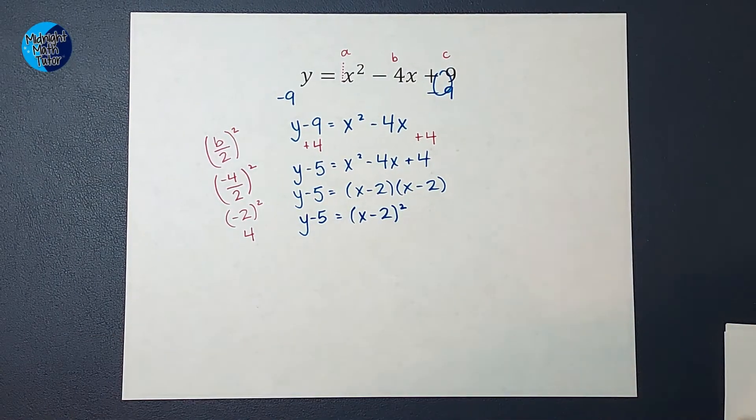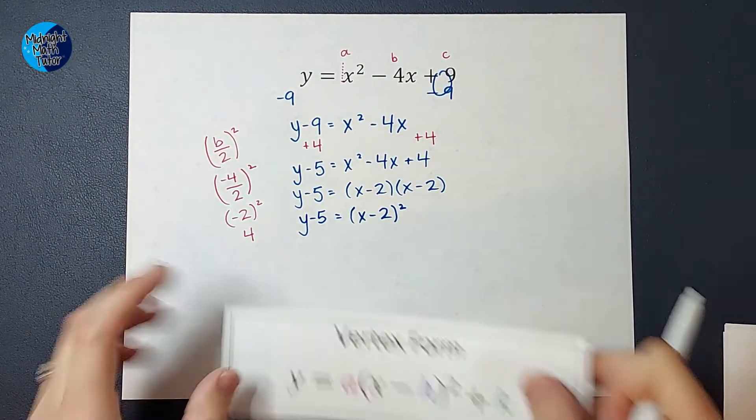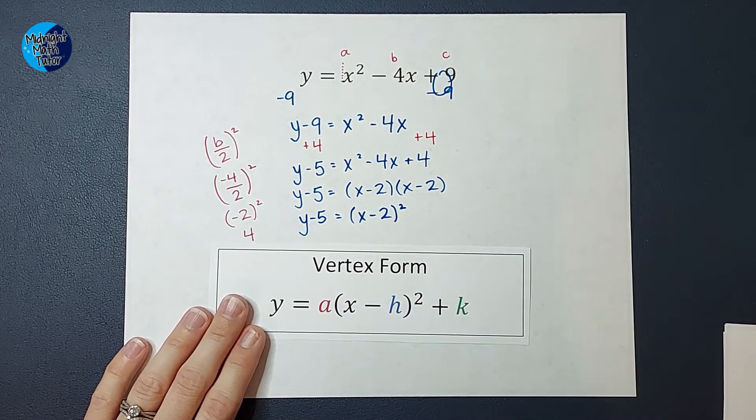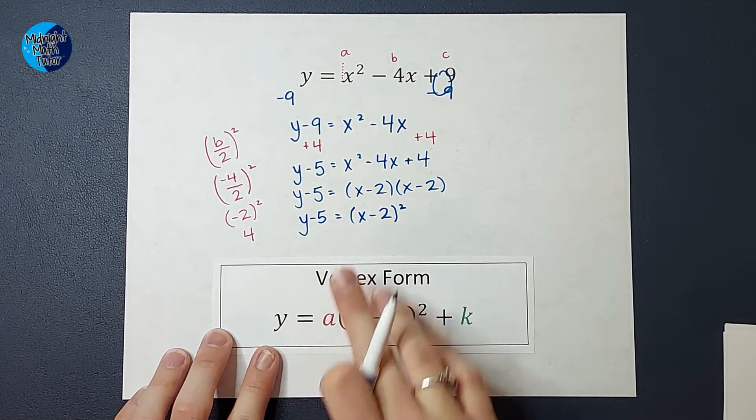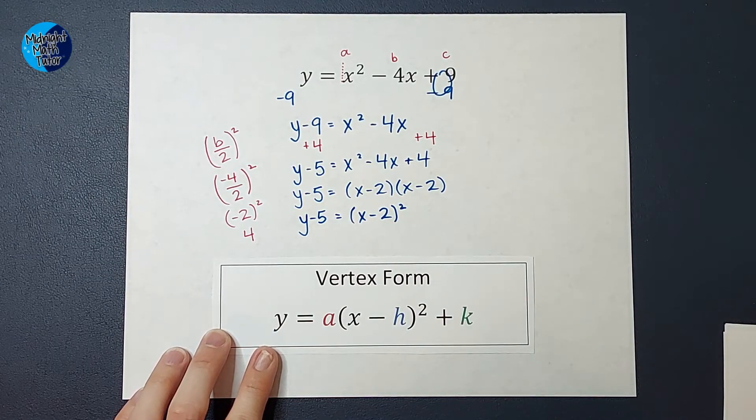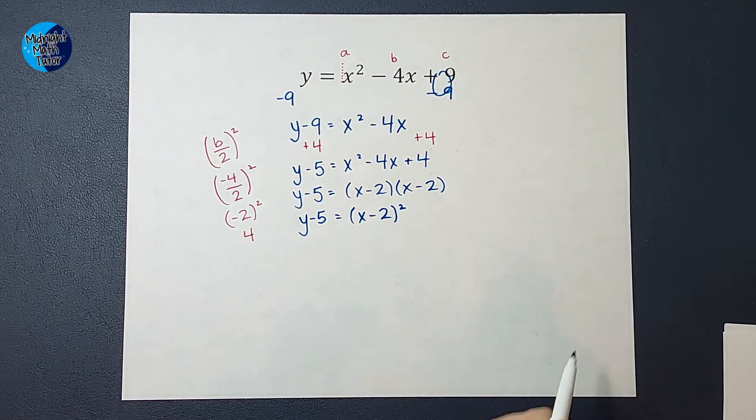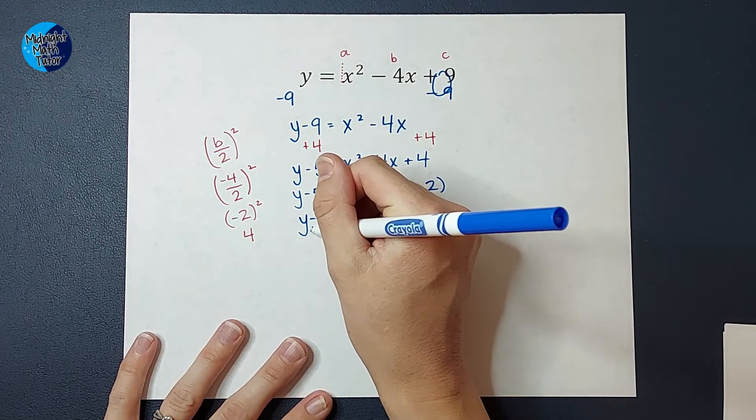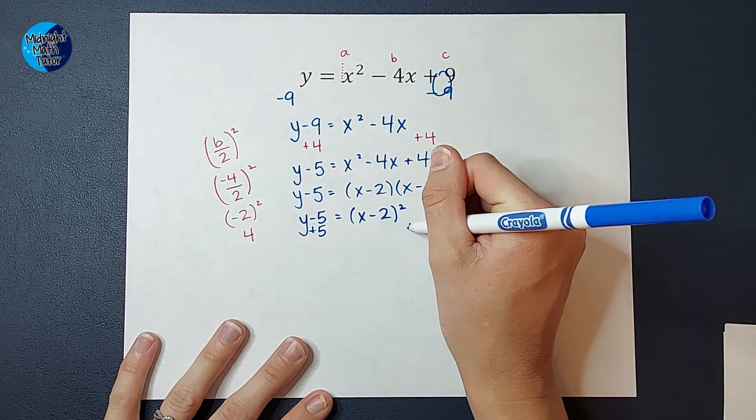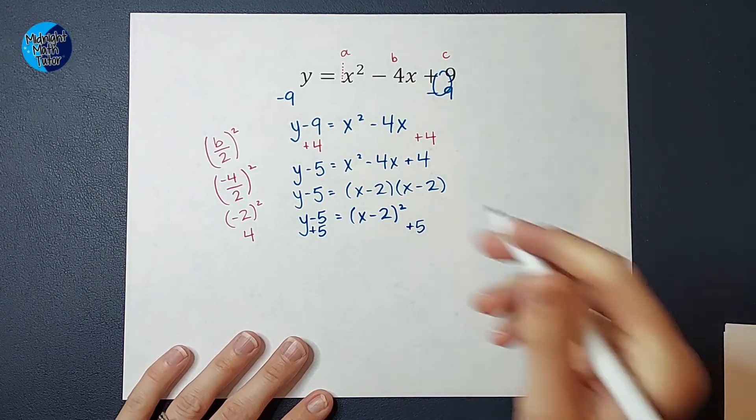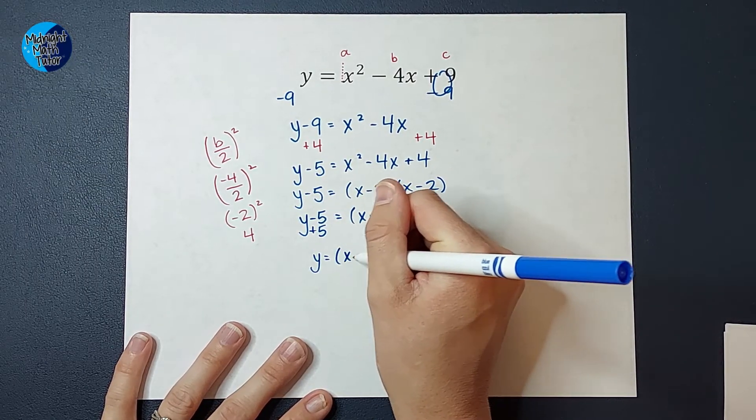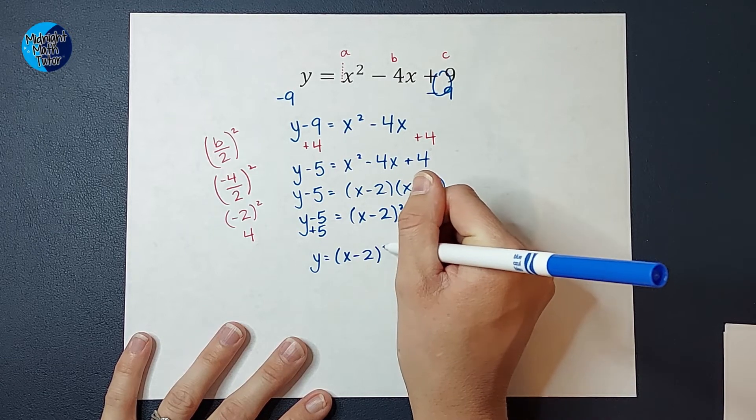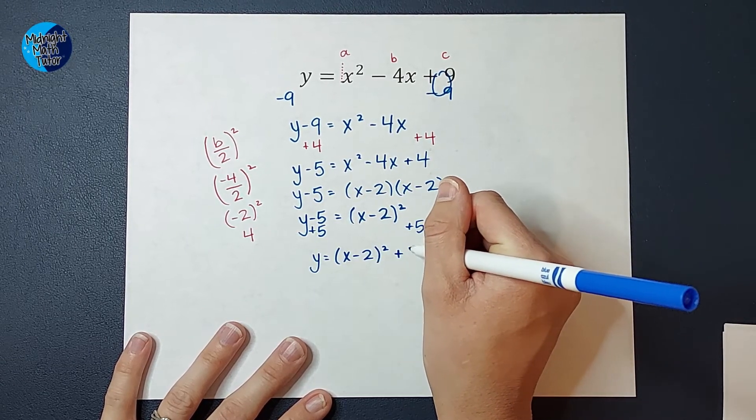So I am getting very close to this vertex form, which is my goal. But you'll notice in vertex form, y is by itself. So I need to get y by itself. To do that, I am going to add 5 to both sides. So I end up with y = (x - 2)² + 5.